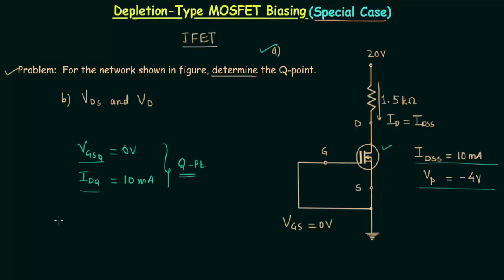Now let's move to the solution of part B. In part B, we have to find out the output voltage VDS. To find the output voltage, we will apply Kirchhoff's voltage law in the output loop.